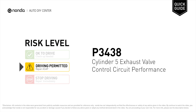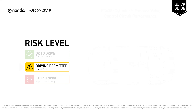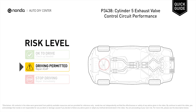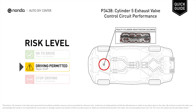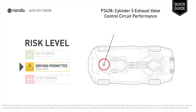P3438 is a diagnostic trouble code for Cylinder 5 Exhaust Valve Control Circuit Performance. Under this circumstance, short distance driving is permitted, but your vehicle should be repaired ASAP. It indicates that the ECM has detected a performance problem within the voltage or resistance in the Cylinder 5 Exhaust Valve Control Circuit.